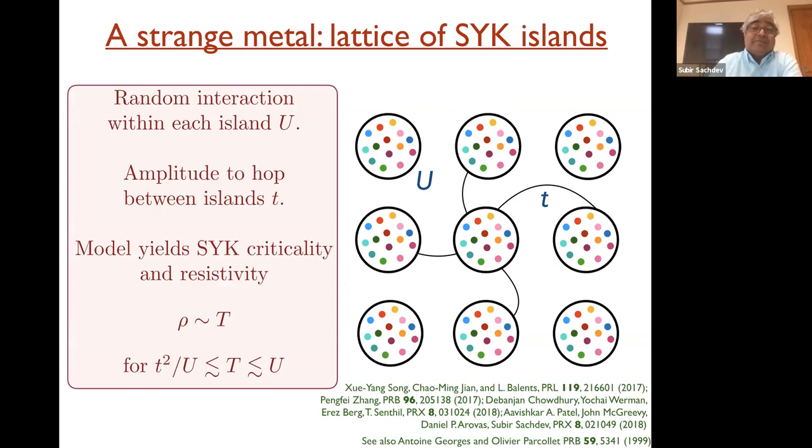But before I get to those systems, let's try to build a strange metal out of just the SYK model. There's been a great deal of work on that. And the general strategy is to take these SYK models, put them in an island and make a lattice of them. Now, in addition to the interaction within each island, which now you can think of as some multi-orbital atom, there's a hopping T between the orbitals. And there's many details can be different in all of the works, but there's some universal property. What you find, first of all, is that there indeed is a wide regime where you get all of these SYK criticality properties I showed you earlier.